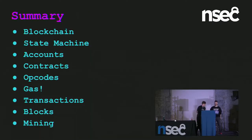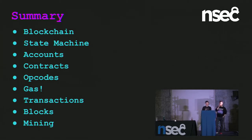That ends our 10 minutes — now you know everything about Ethereum. It's a blockchain, you can also think of it as a state machine. It has accounts; accounts can be contracts. Contracts are made up of opcodes and have gas prices. We send transactions, they go in blocks, and the blocks are mined. Any questions?